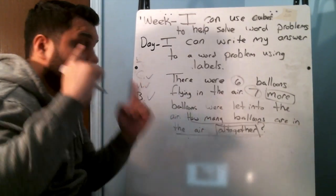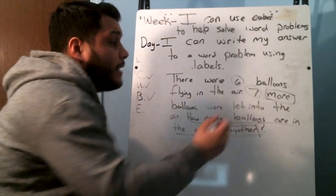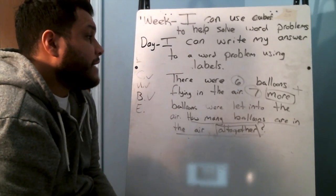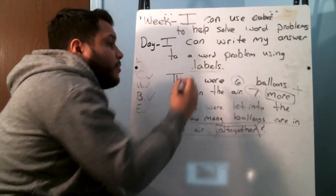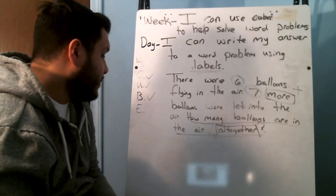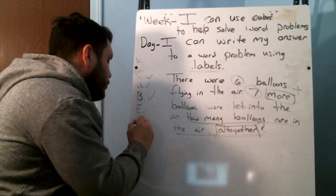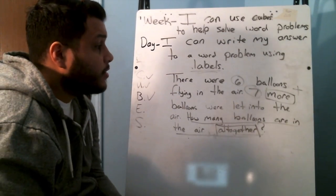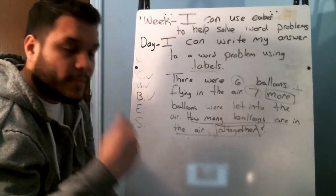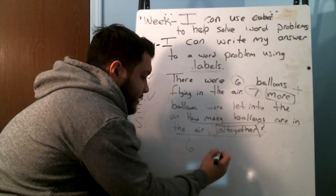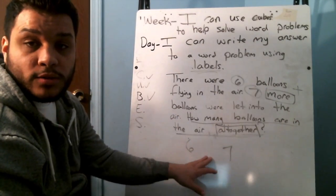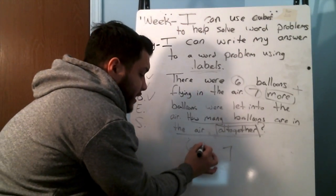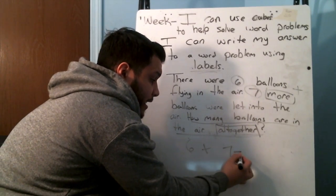Now I want to evaluate. When I evaluate, I think about what I'm going to be doing. I know that 'more' lets me know that I'm going to be adding. I know that I'm writing an answer, so I need to have a number sentence. And today I know I'm using labels as well. The last thing I need to do is solve and check. I'm going to need at least two addends. My first addend is six, my next addend is seven. More lets me know we are adding — a plus sign. I also have to have an equal sign.